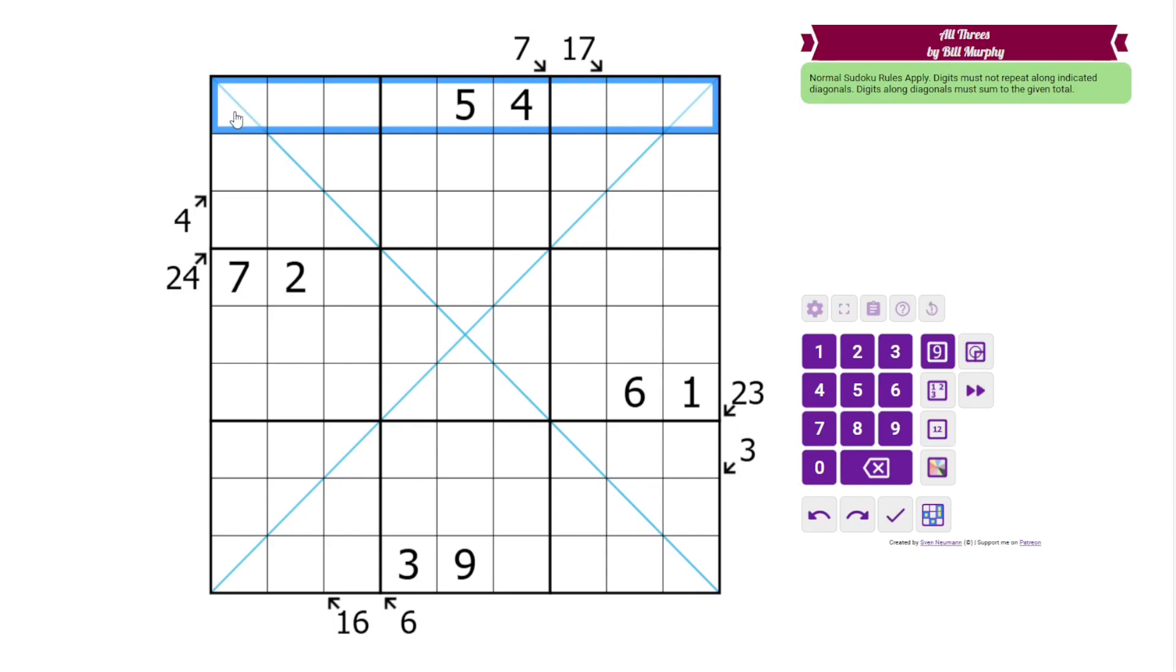So we have normal Sudoku rules, 1 to 9 in each row, column, and 3 by 3 box. Additionally, we have 1 to 9 along each of the indicated blue diagonals. Digits can't repeat, and there are 9 cells, so they must contain the digits 1 to 9 exactly once each.